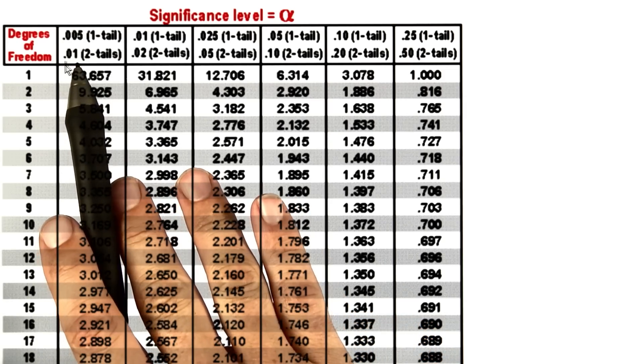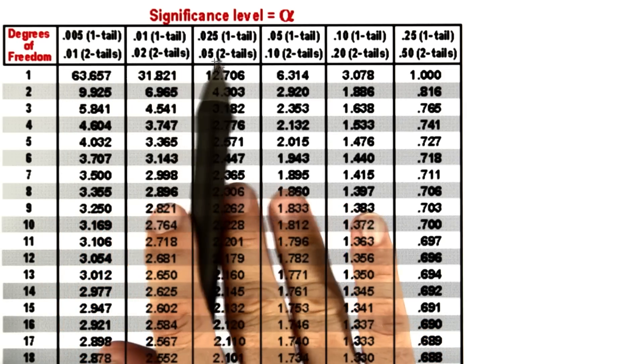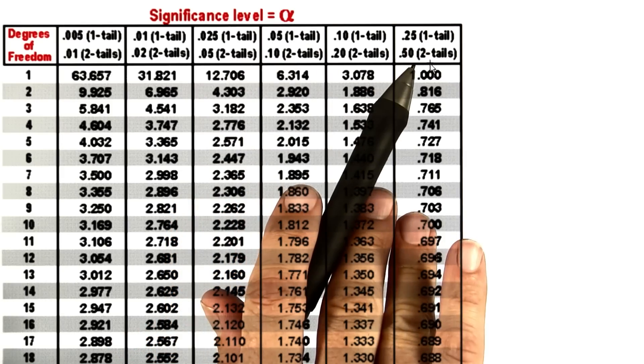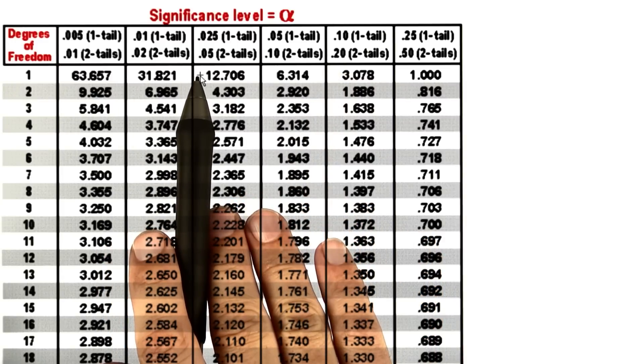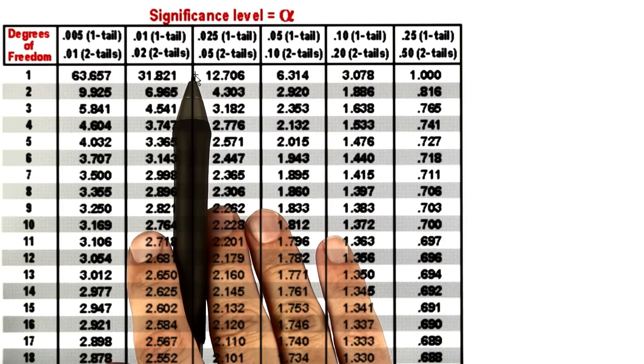On the top, you'll see 1 minus the confidence level. So if you want 95% confidence, you go to 0.05. If you want 98% confidence, you go to 0.02.